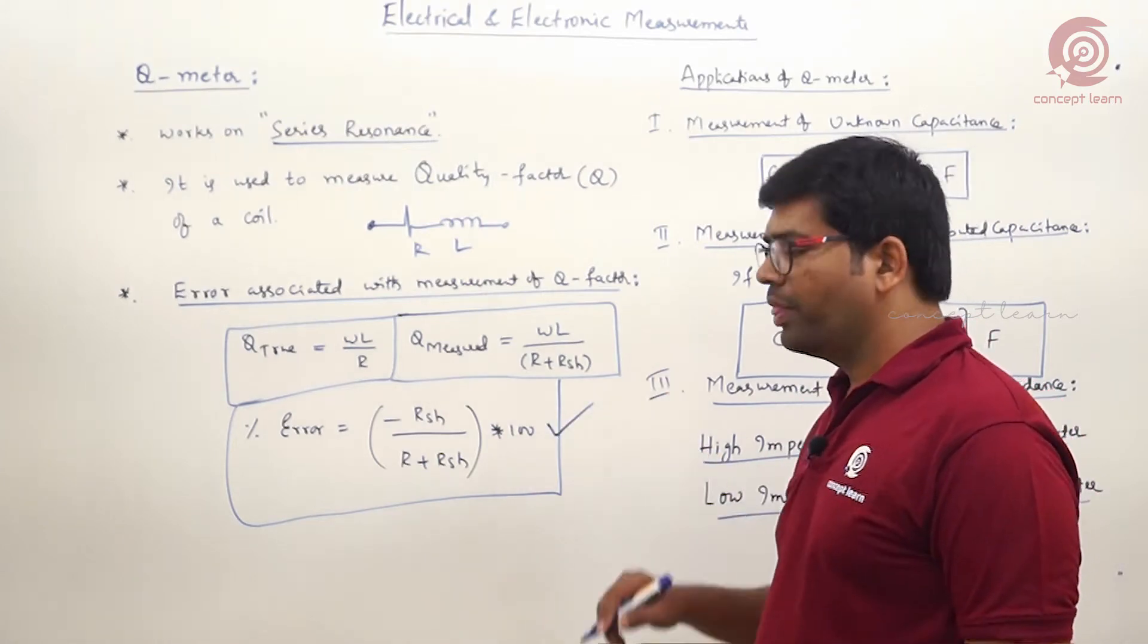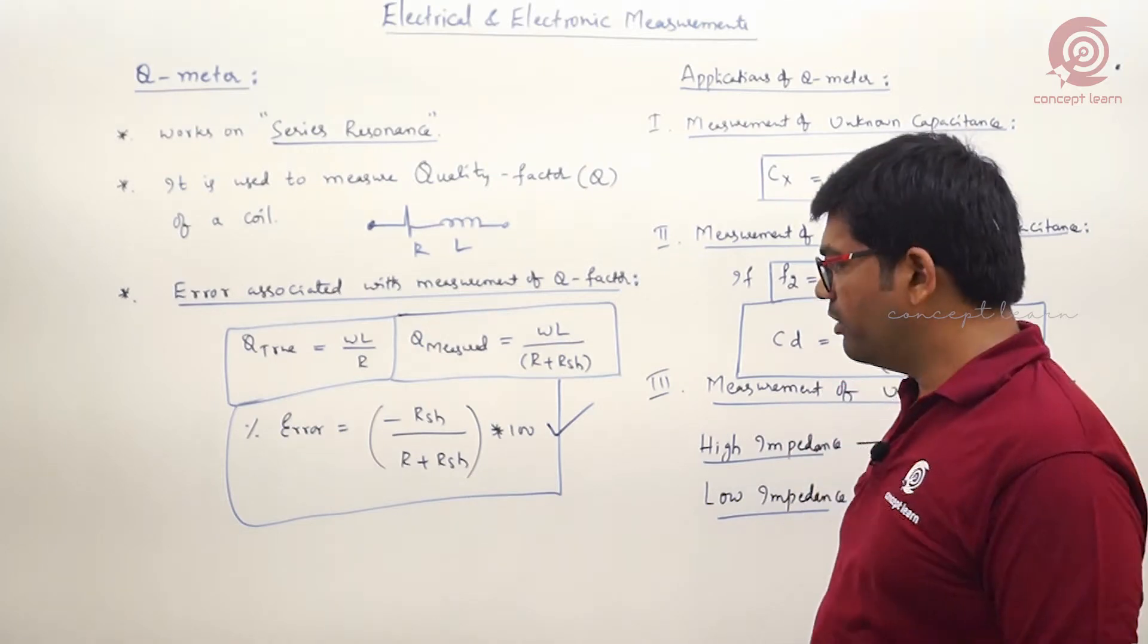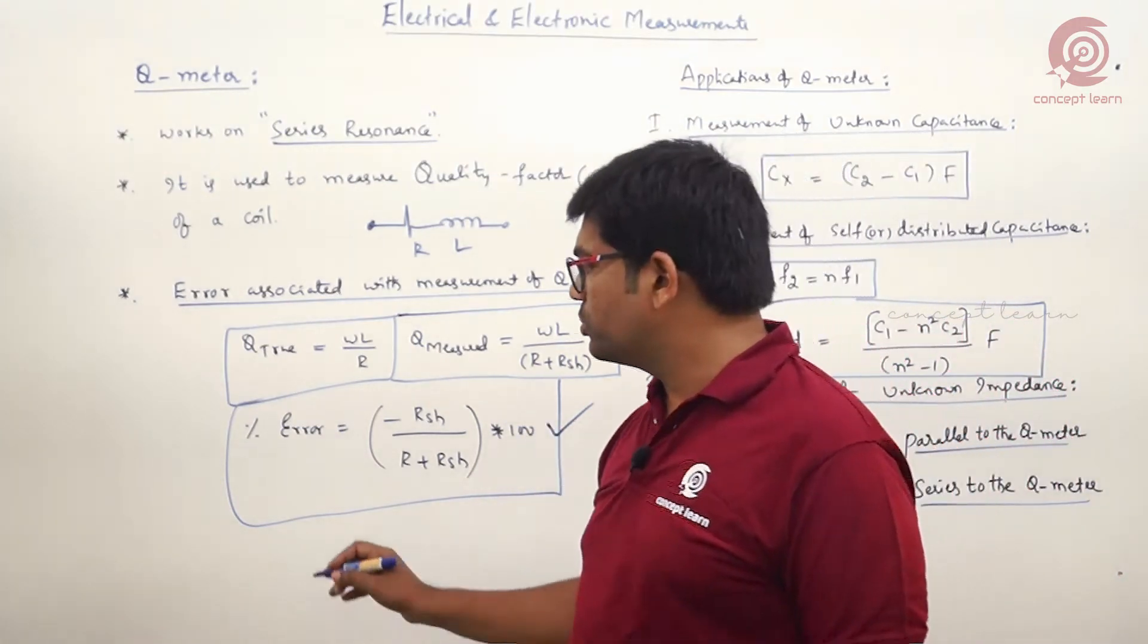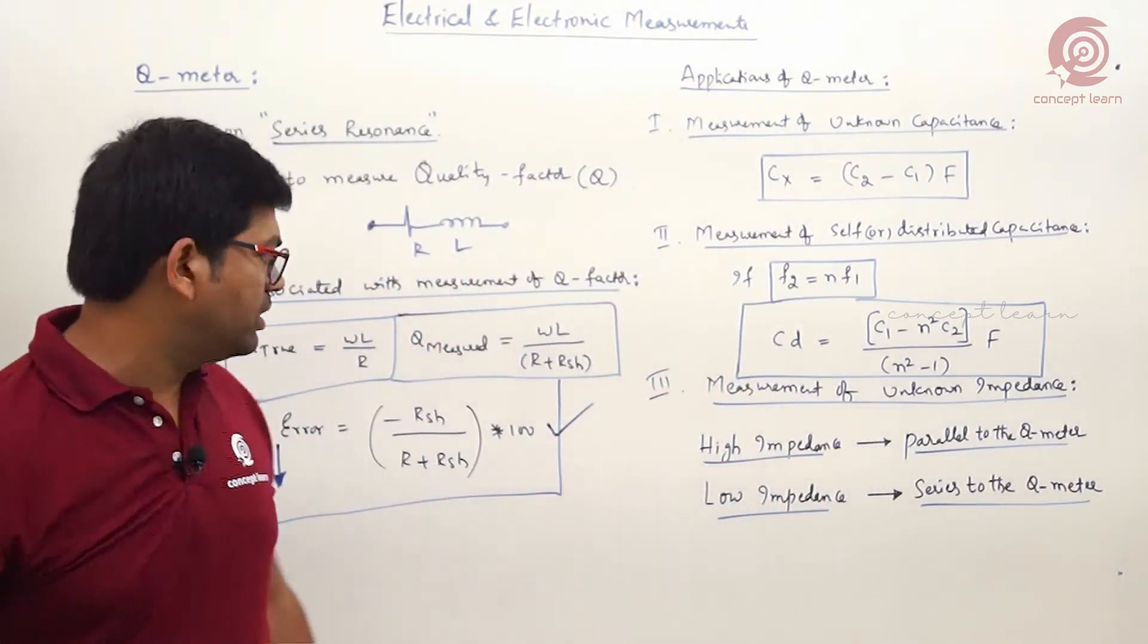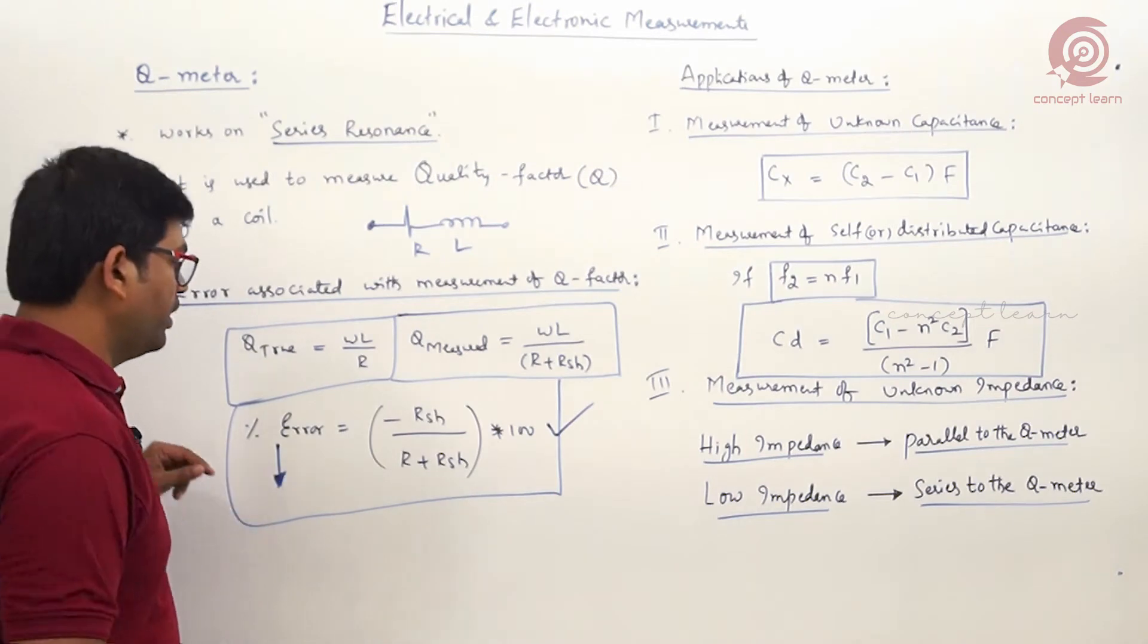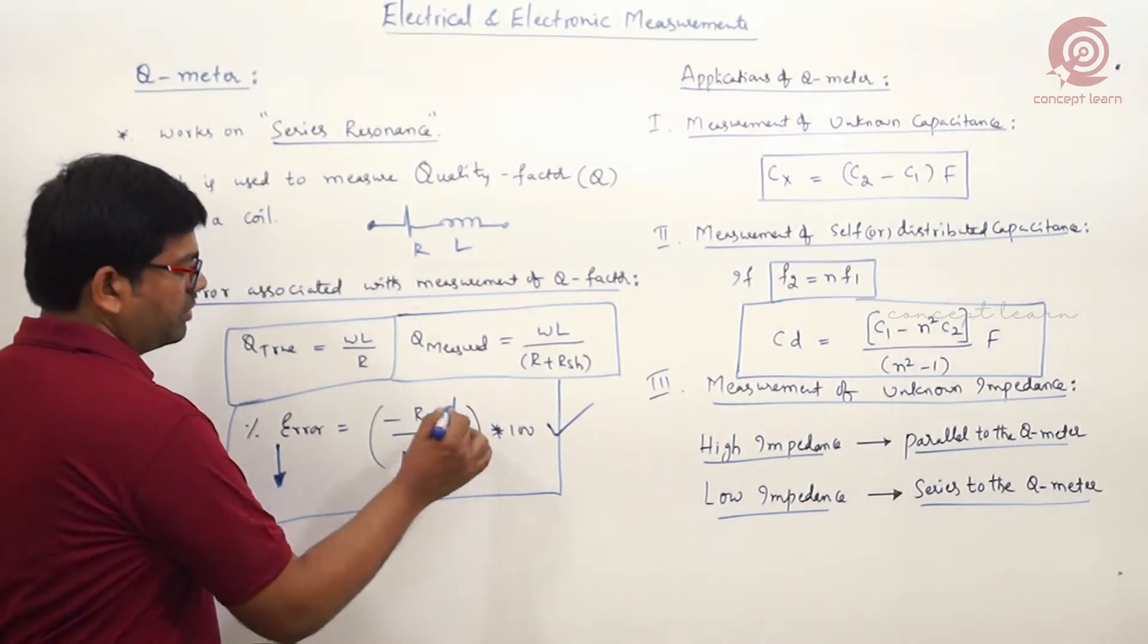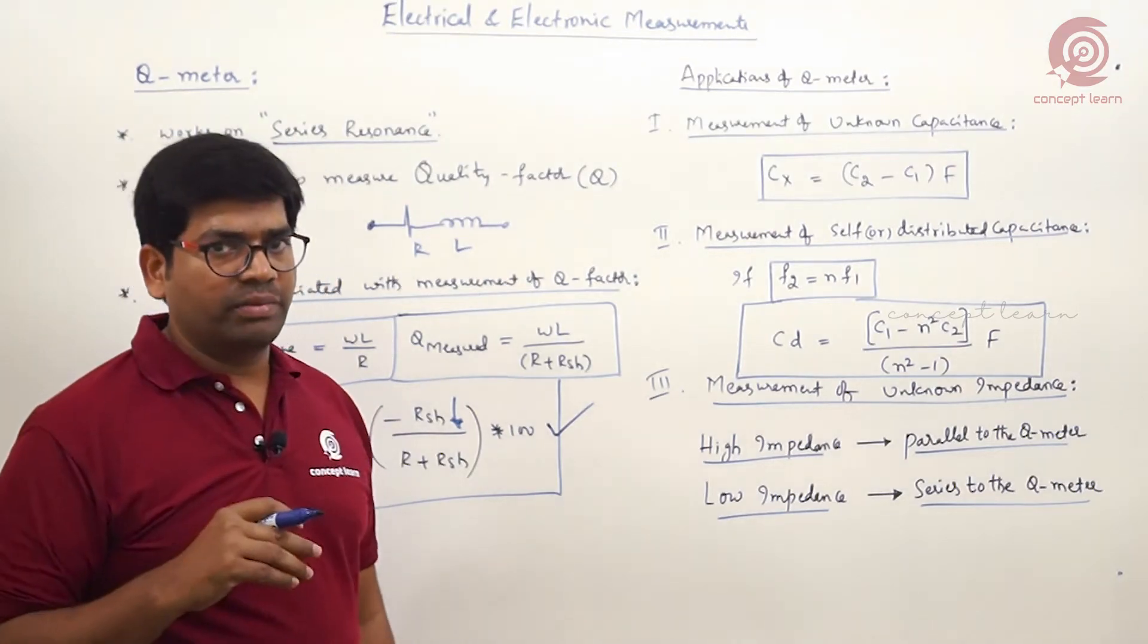If you notice this error expression, always our intention is to minimize the error. How to get minimum percentage error? To have minimum error, shunt resistance must be minimum. So in a Q meter, shunt resistance must be minimum to have minimum error.